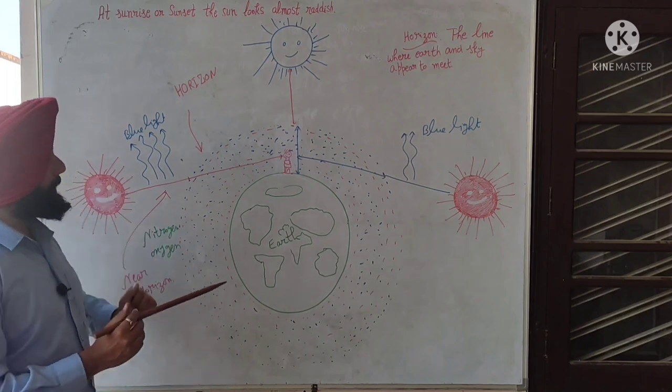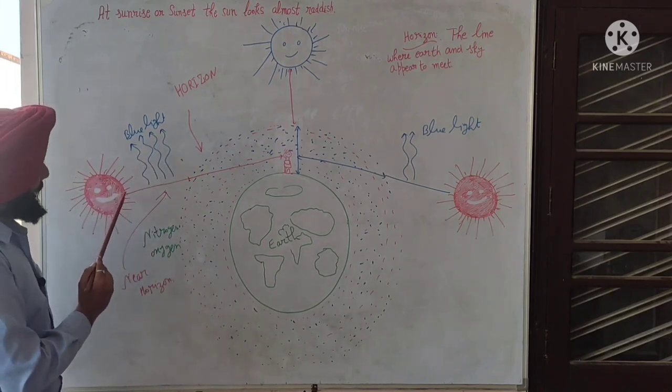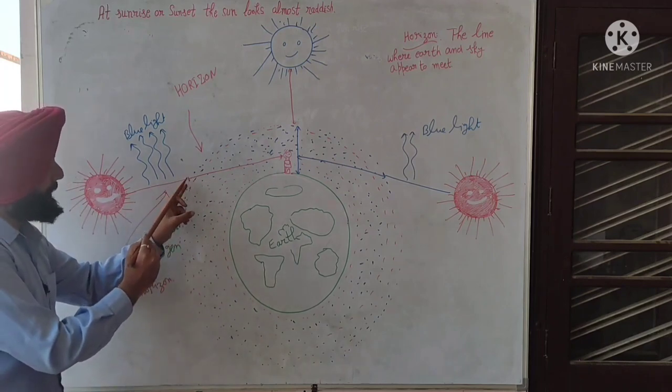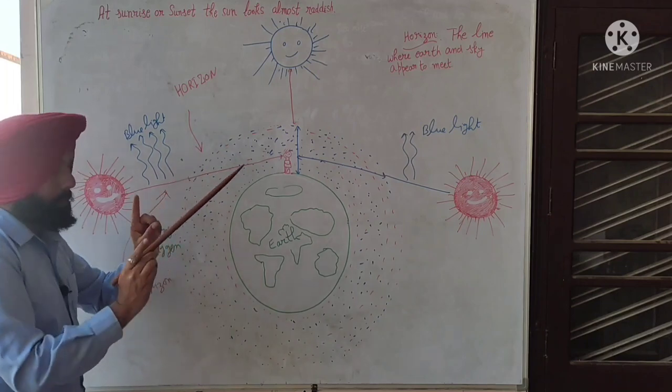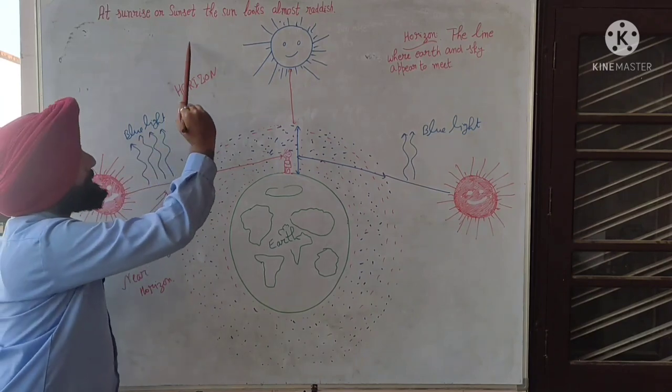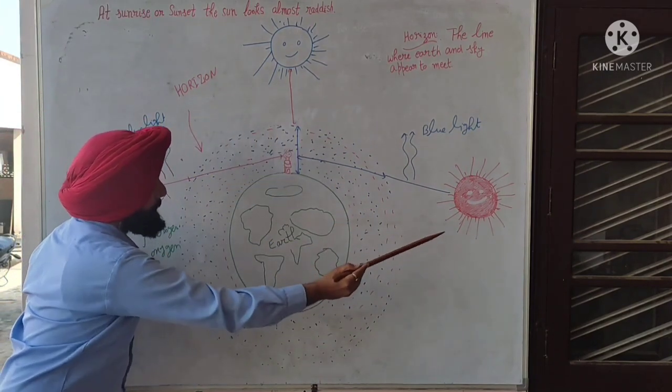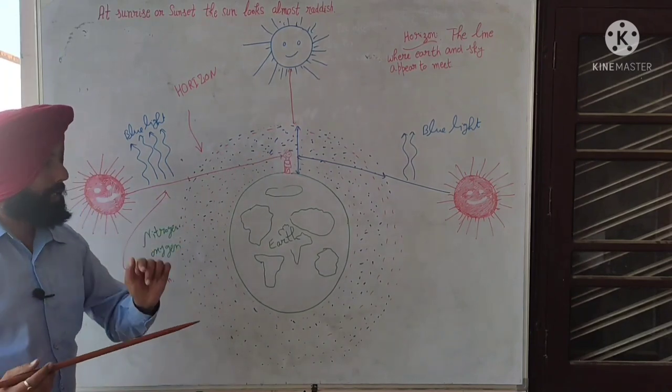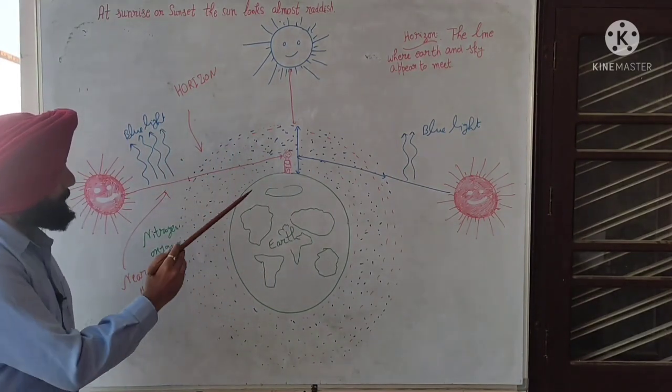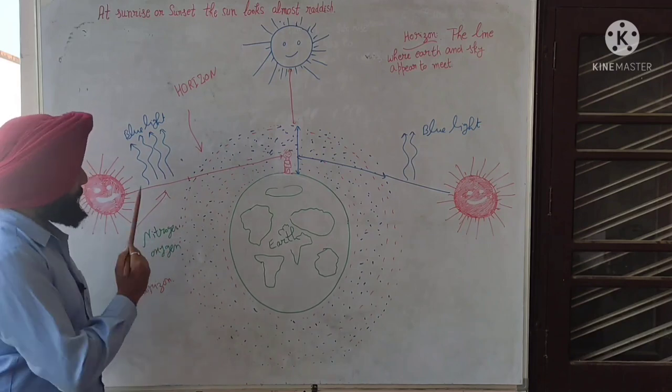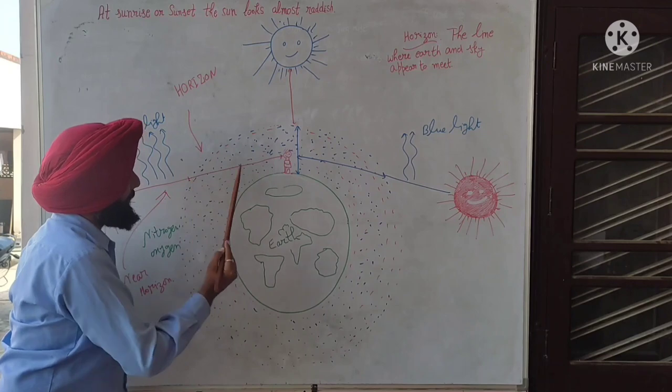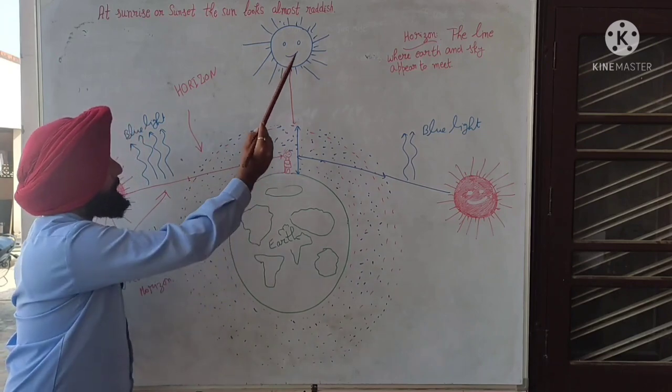When the light travels here near the horizons, near the horizon, the distance from the earth is the same here and here when the sun is overhead.